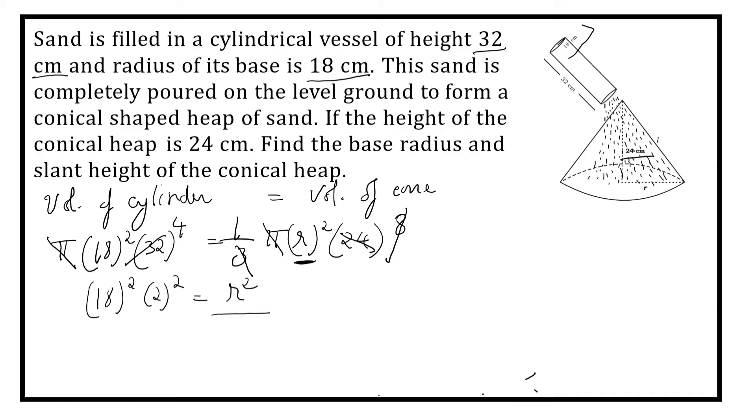Here we are asked to find radius of the cone. It implies that R square is equal to 18 square into 2 square. You can put whole bracket, 18 into 2 the whole square. So R square is equal to 18 into 2 the whole square. So radius is equal to 36 centimeter. Now we have found out radius of the cone, that is equal to 36 centimeter.